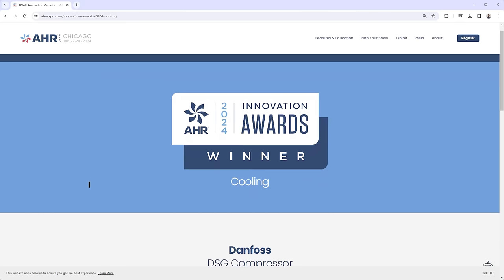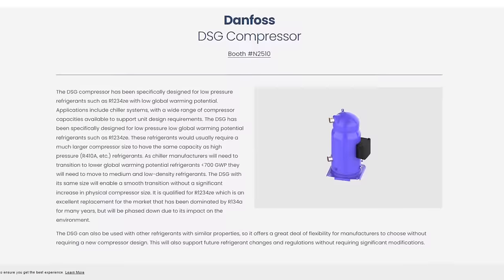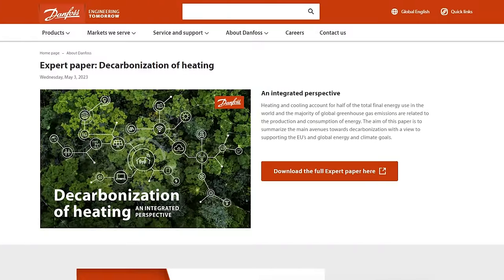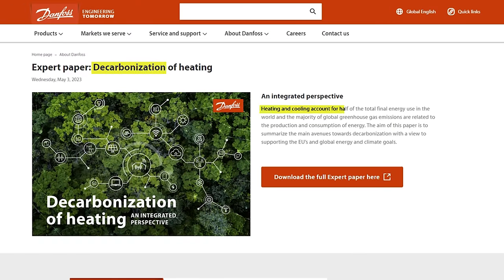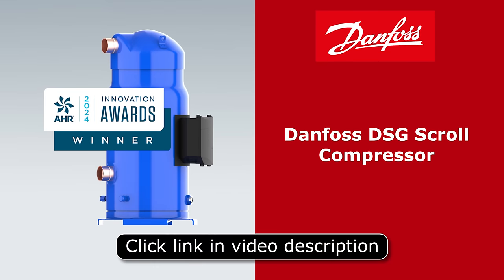The DSG range provides unmatched flexibility for both cooling and heating needs. Its versatility, innovative design and top-notch efficiency have set new high standards, allowing OEMs to design a new generation of sustainable HVAC systems and accelerate the decarbonization of the cooling and heating sectors. Check out the link in the video description to learn more and see the specifications for the entire range.